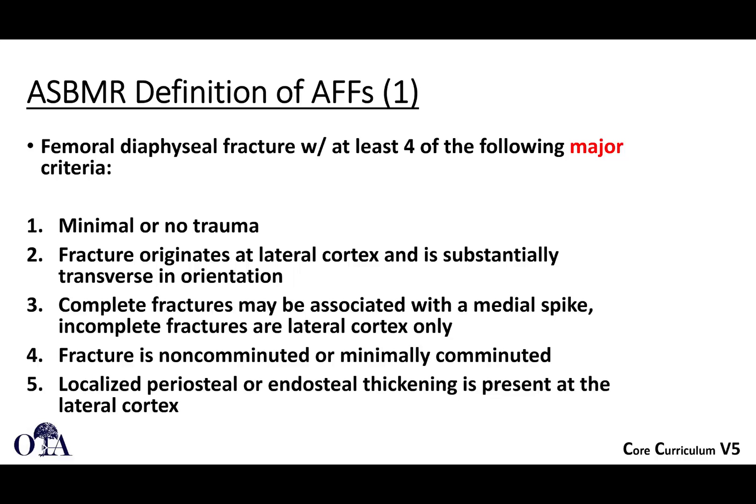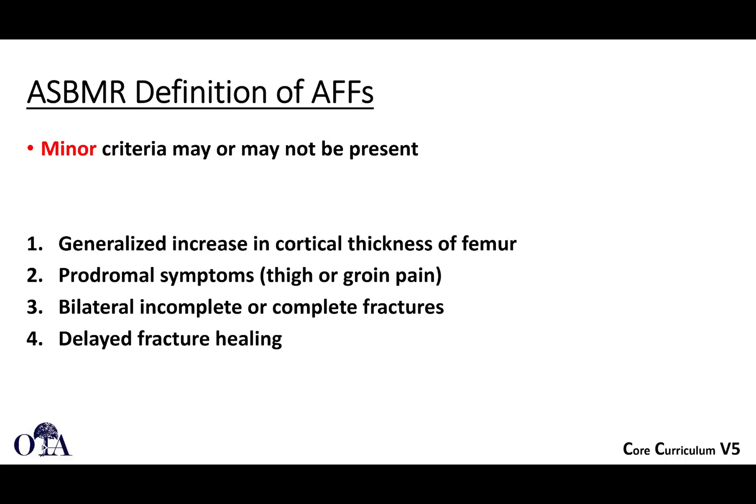Number two: the fracture originates at the lateral cortex and is substantially transverse in orientation. Three: complete fractures may be associated with a medial spike, and incomplete fractures are typically fractured only through the lateral cortex. Four: the fracture is non-comminuted or minimally comminuted. Five: there is characteristic localized periosteal or endosteal thickening at the lateral cortex — so-called beaking. Minor criteria include general increase in cortical thickness of the femur, prodromal symptoms, bilateral incomplete or complete fractures, and delayed fracture healing.